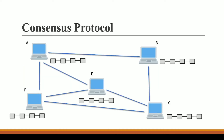Let us understand this with the help of an example. This is our blockchain network, and let us say A as well as C created a block at the same time. This type of thing can happen. A can pick a transaction from the mempool — which we'll discuss in upcoming videos — and C has also picked transactions from the mempool. They started solving a mathematical problem and solved it at the same time.